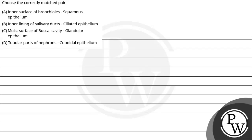Hello, let's see this question. The question says: choose the correctly matched pair. Option A: inner surface of bronchioles paired with squamous epithelium. Option B: inner lining of salivary ducts, ciliated epithelium. Option C: moist surface of buccal cavity, glandular epithelium. And Option D: tubular parts of nephrons, cuboidal epithelium.